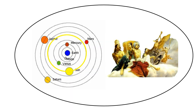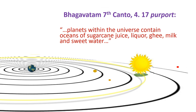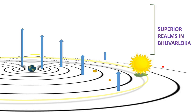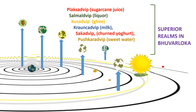Combining the demigod realms and the solar system: Bhagavatam Seventh Canto, 14.17 purport reads — the planets within the universe contain oceans of sugarcane juice, liquor, ghee, milk, and sweet water. This could be references to Pitra realms in Bhuvar Loka, earth-connected planets. The various Plaksha-dvipa, Salmali-dvipa, Kusha-dvipa and their exotic oceans become more like heavenly planets than the earth, but they have some kind of connection with our local solar system.